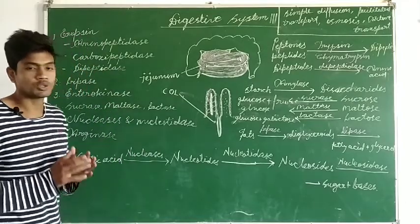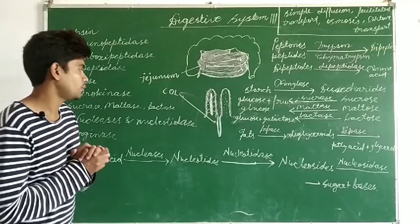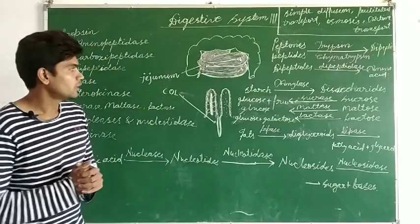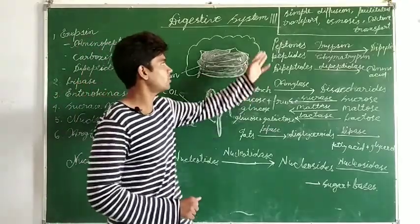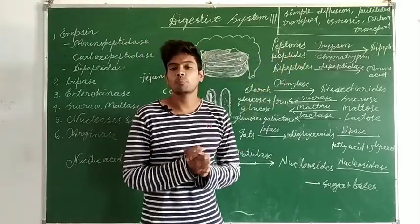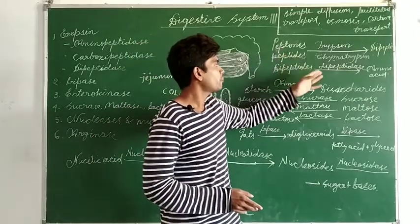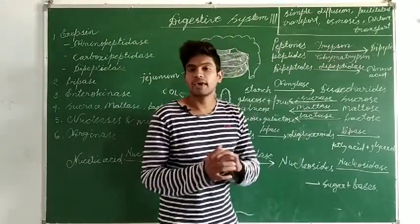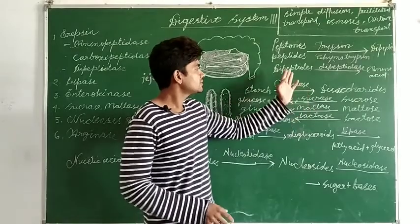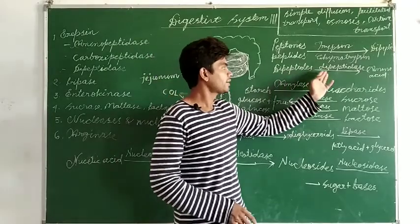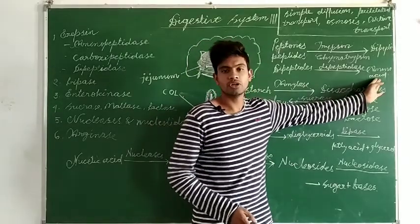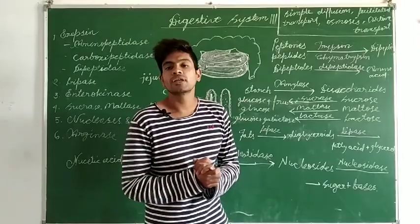Now we will see one by one how the substances are digested. Starting from protein: peptones and peptides are the complex forms of protein. They are acted upon by trypsin and chymotrypsin and converted into dipeptides. These dipeptides are then acted upon by dipeptidase and ultimately converted into amino acids.